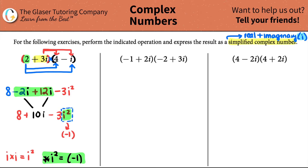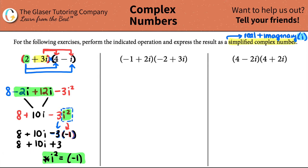Here's the key: i squared is the same thing as negative one — star this, it's super important. So this i squared is really a secret negative one. That means negative three i squared is really negative three times negative one, which is positive three. Bringing everything together: eight plus 10i plus three. Grouping the real parts, eight plus three is 11. So the final simplified complex number is 11 plus 10i.